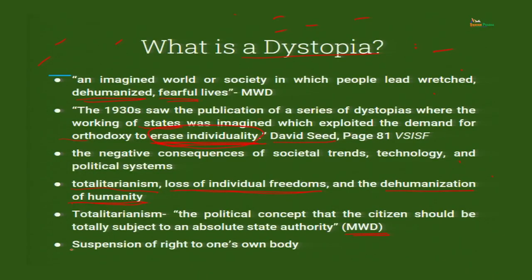So there will be absolute dehumanization. The basic human instinct is to go and help a fellow human being, but you do not do it because you know there is a lot of paperwork and responsibilities. All these things cloud your judgment and make you less of a human being. Suspension of right to one's own body — that is called habeas corpus. Once we are in a dystopian society, we don't have right to our own body. The state, if it wills, can take our body, can take our organs.